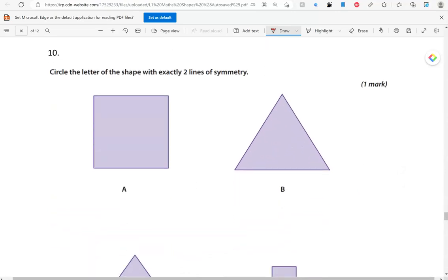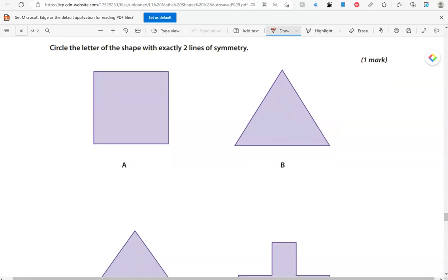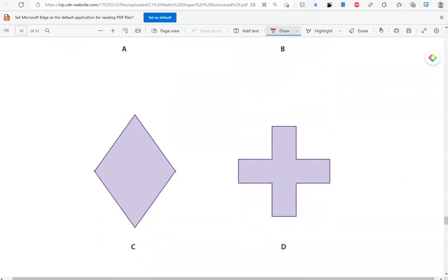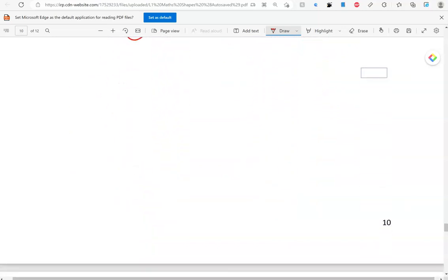Circle the letter of the shape with exactly two lines of symmetry. A, which is a square, it has four lines of symmetry. B seems to be an equilateral triangle, which would have three lines of symmetry. If it was an isosceles triangle, it would have only one line of symmetry. And if you were scaling, it would have no line of symmetry. So, B isn't an option either. C is a rhombus. And it has 1, 2 lines of symmetry. So, I'm going to circle C. D has more than two lines of symmetry. So, only C should be circled.